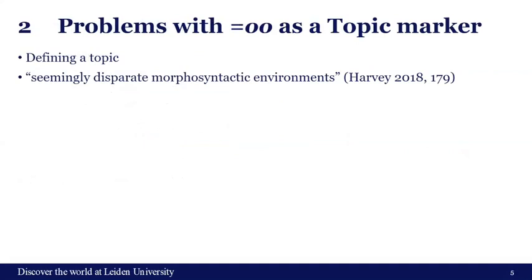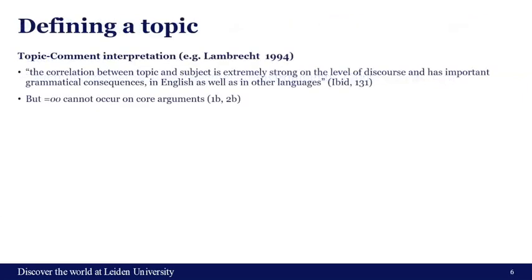Some problems I have with 'o' as a topic marker: first, I will try to define a topic. One interpretation of topic is within a topic-comment framework, where a comment says something about a topic, which is always present either overtly or non-overtly. In this framework, the correlation between topic and subject is extremely strong at the level of discourse and has important grammatical consequences in English as well as other languages.